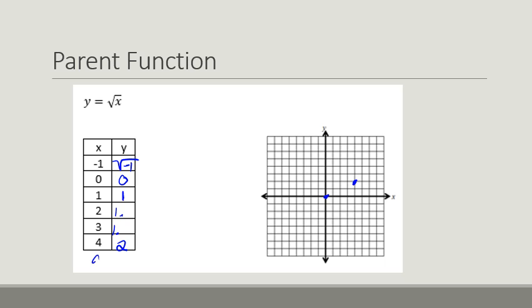And if we wanted to, we could go out to 9 because the square root of 9 is 3. It would be here. And of course, we have the 1, 1. So our graph would look something like this.